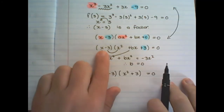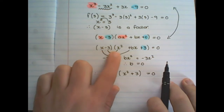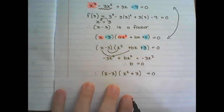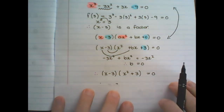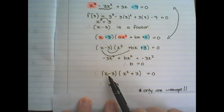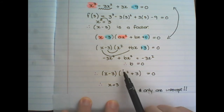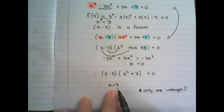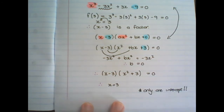Therefore my factored form is (x minus 3)(x squared plus 3). I place every bracket equal to zero. So x minus 3 equals 0 gives x equals 3. I cannot factorize the second bracket, and when I use the quadratic formula I get no solution. So there is no further solution, meaning I only have one x-intercept.